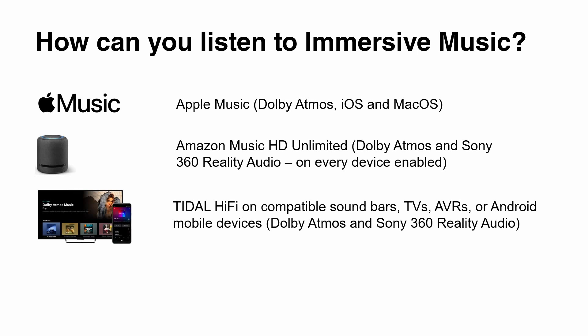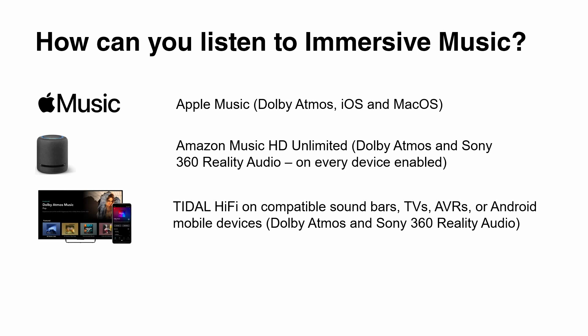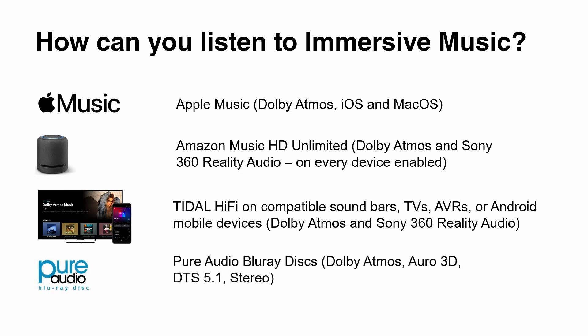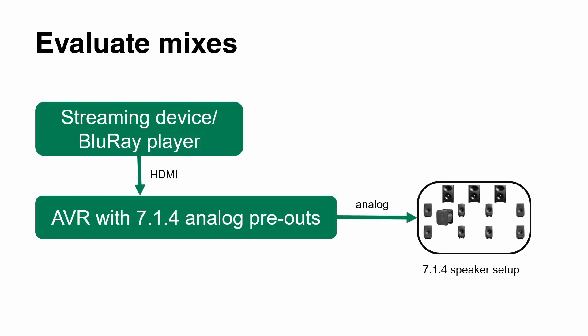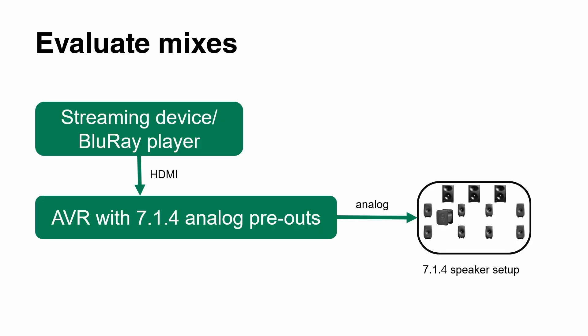Tidal content can be listened to over TVs, AVRs, Android mobile phones, or streaming boxes like Apple TV or Amazon Fire Cube. The Pure Audio Blu-ray disc is also always an option — particularly interesting because it can handle multiple immersive formats on the same disc: Dolby Atmos, Auro 3D, DTS-X, 5.1, Stereo, and more. To make these sources available on your studio speaker setup, you use a consumer AVR preamp that offers analog pre-outputs — or even some with digital pre-outputs or a Dante connection for streaming.